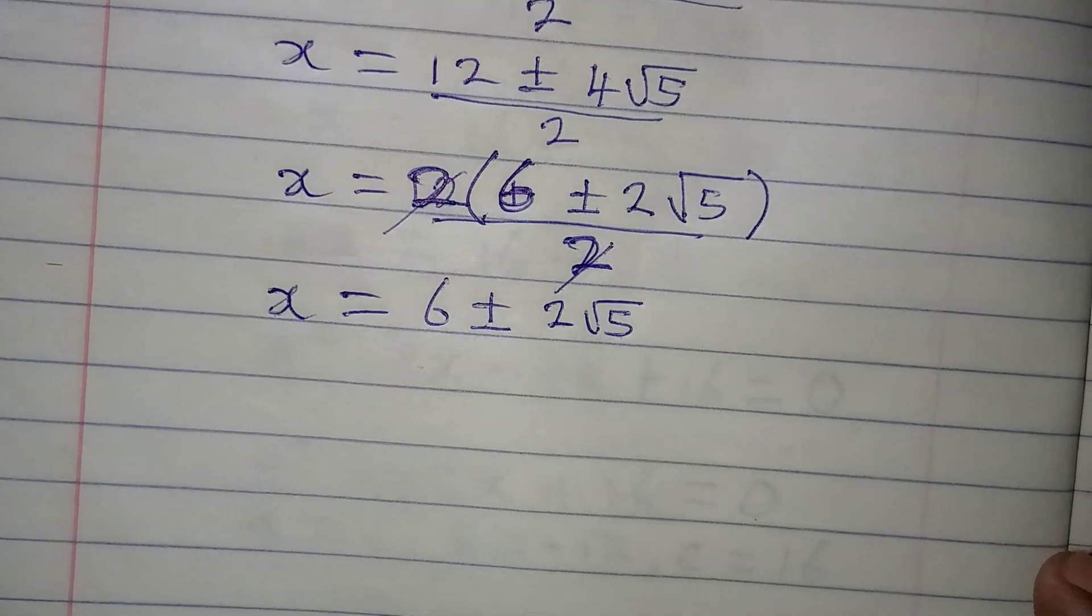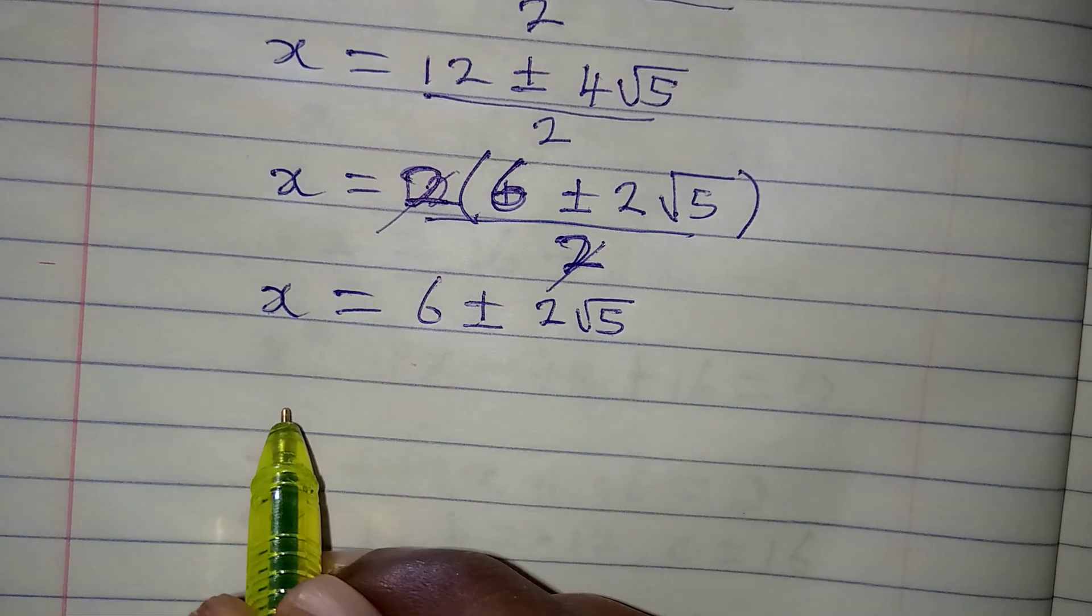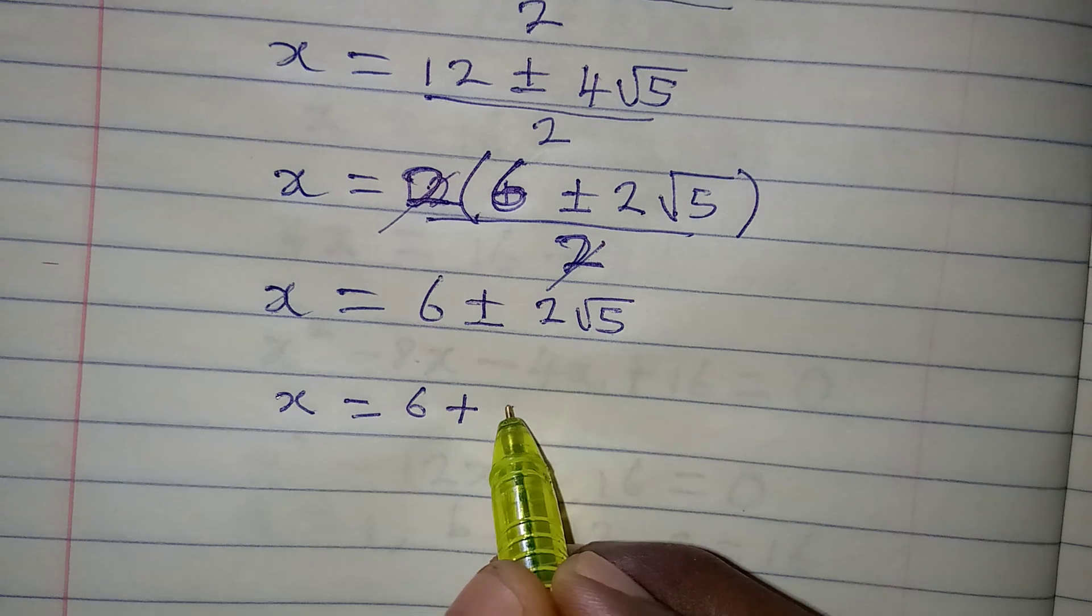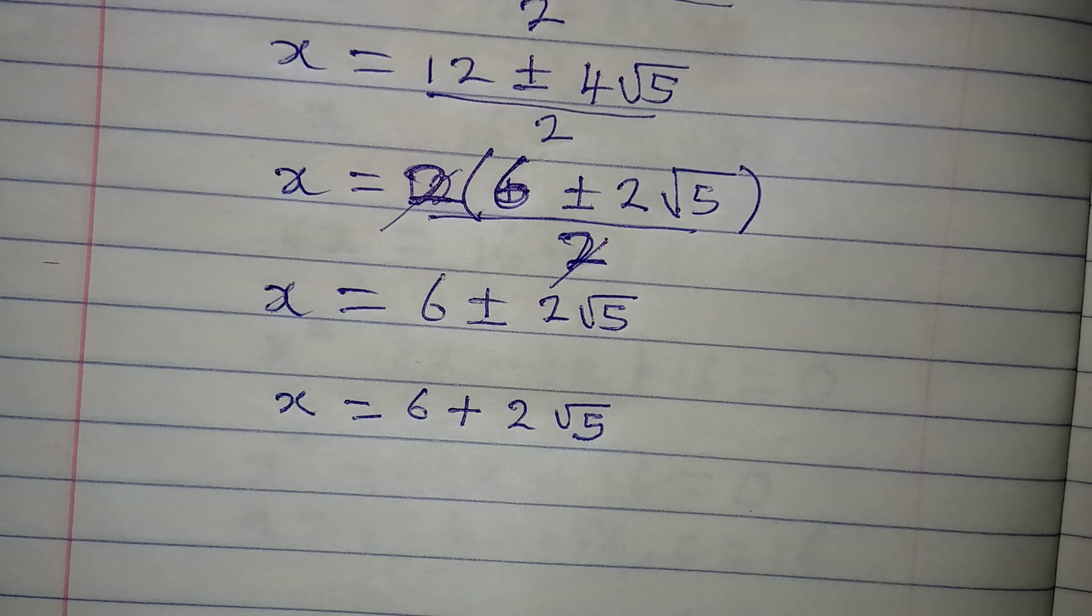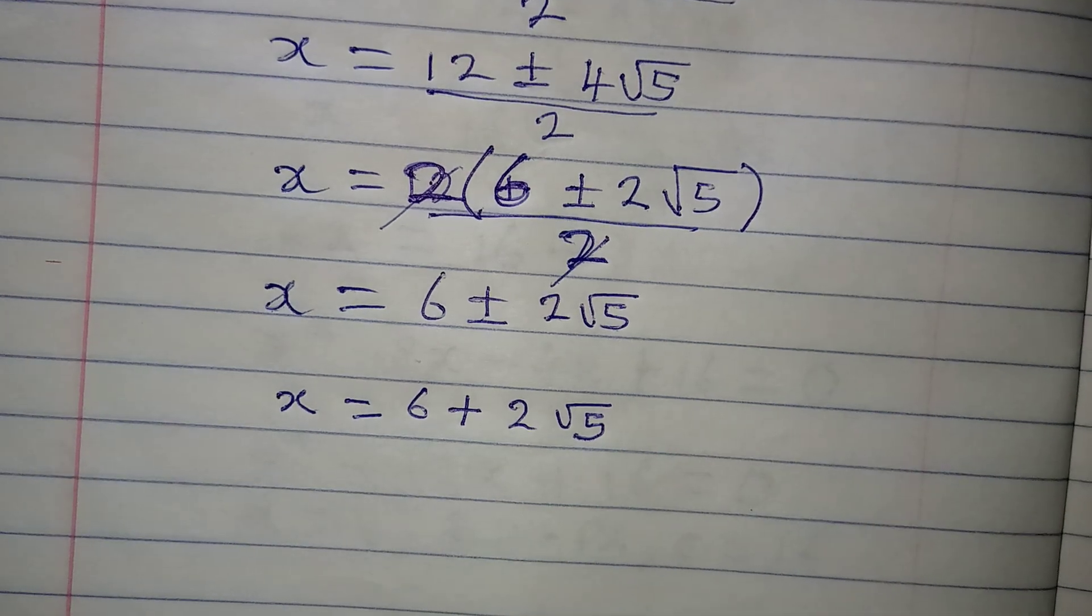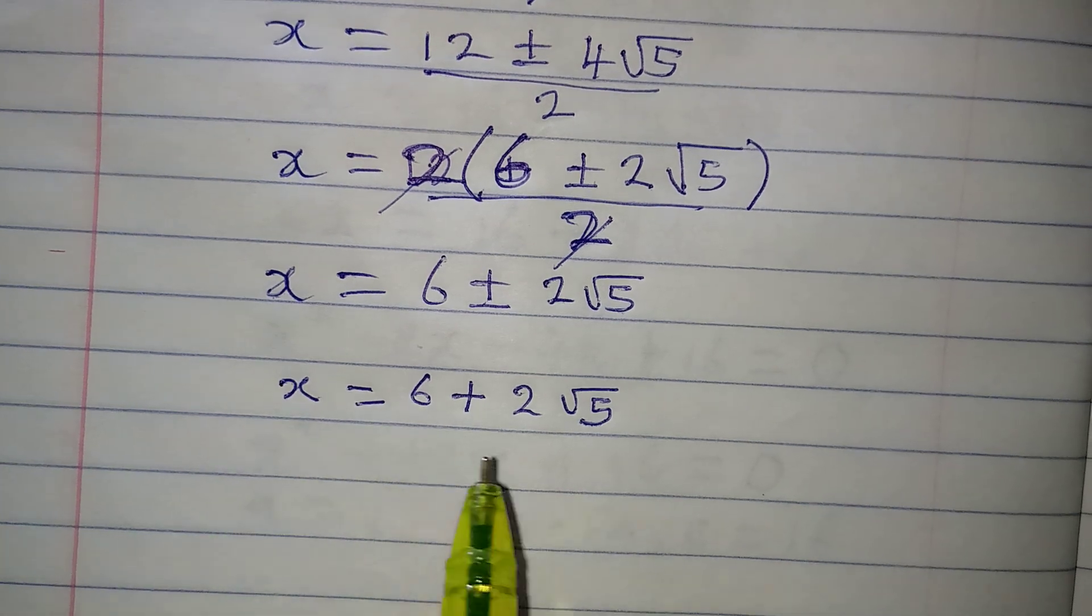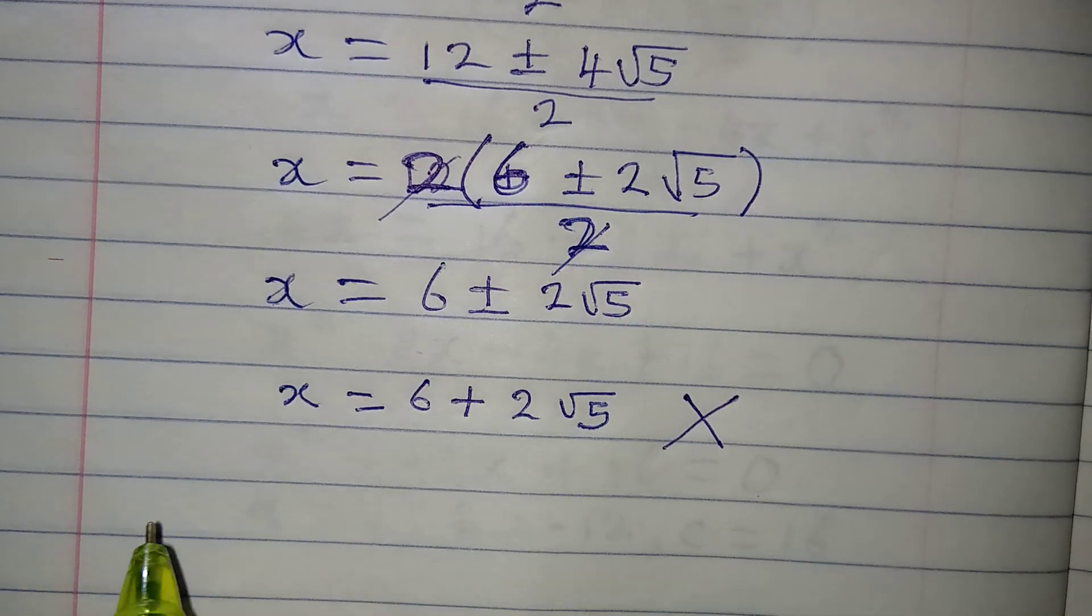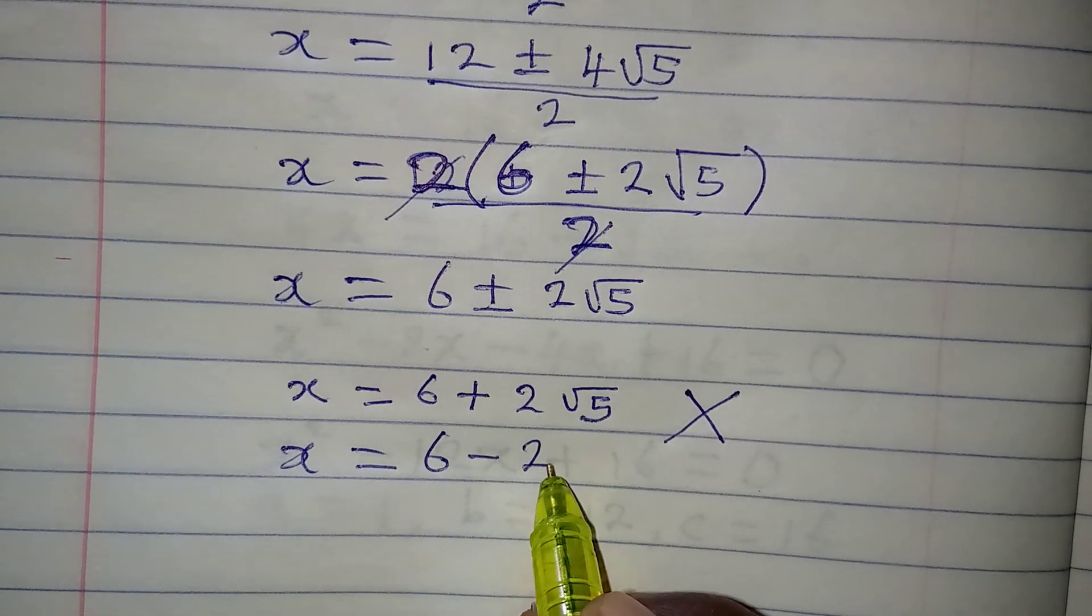So this becomes the solution, and this is a 2 in 1 solution. Let's point it out. So the first solution now will be x to be equal to 6 plus 2 root 5. So this is the first solution. But the question is, does this satisfy the given equation? The answer to this question is no. This does not satisfy the given equation, so we don't consider it a solution.